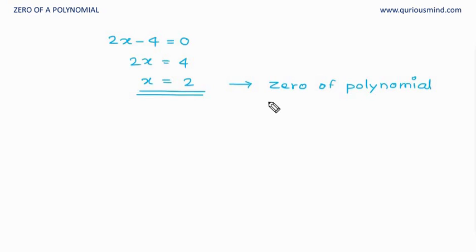Now what about a non-zero constant polynomial? 12. This is a constant polynomial and we know that actually this is 12 into x raised to 0. So let me equate this to 0 to find the 0. So that is 12 is equal to 0. Can 12 be equal to 0? No, that is not a mathematically correct statement.